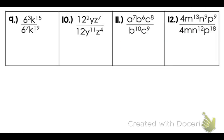For number nine: six to the third power and six to the seventh power — same base. Because the seventh power is highest, I subtract from the bottom since seven is bigger than three. For k to the 15th power and k to the 19th power, because 19 is larger I subtract from the bottom as well. I'm only doing this to avoid working with negative exponents.